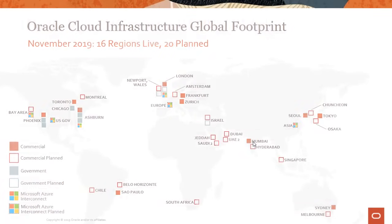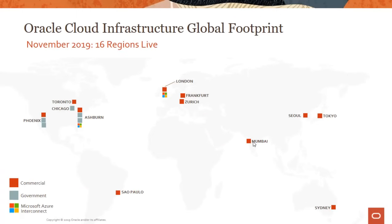Let's look at the Oracle Cloud Infrastructure Global Footprint. Currently Oracle operates 16 regions globally, including 11 commercial regions and 5 government regions. In America we have 4 regions, in Europe we have 3 regions, in Asia we have 4 regions, and for government we have 2 US government regions and 3 US DoD regions.